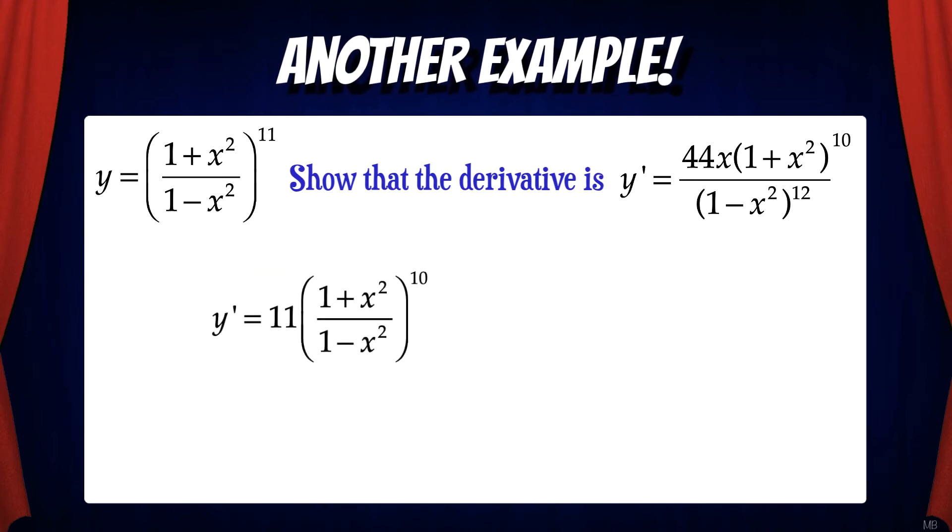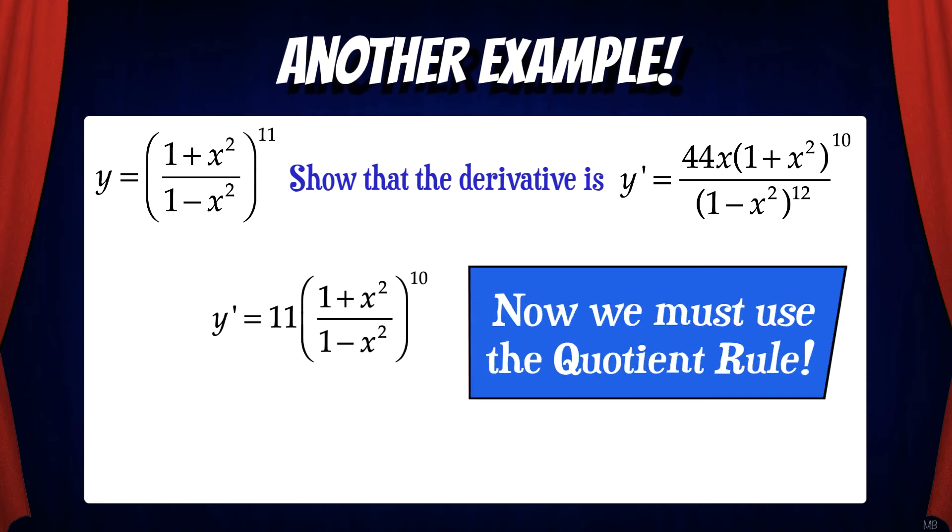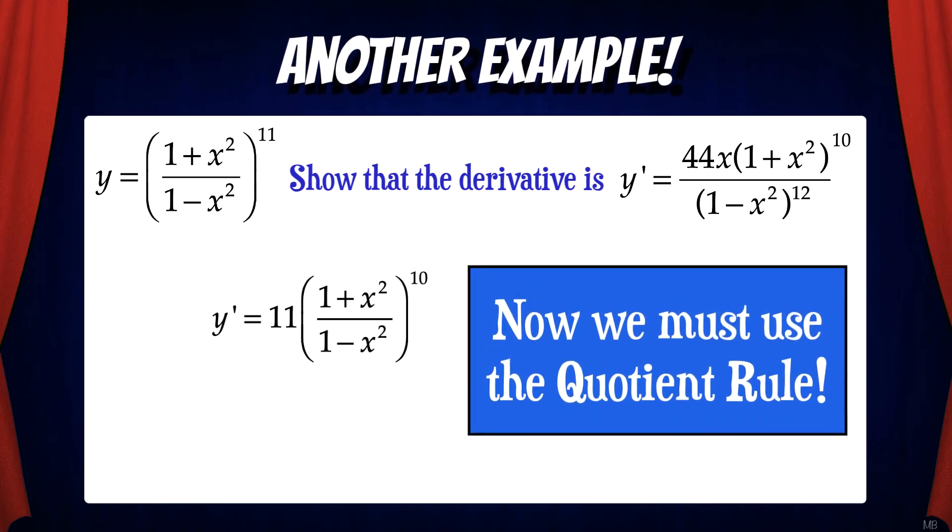So the first part of the derivative is 11 times the quantity of 1 plus x squared over 1 minus x squared to the 10th power. Now we multiply by the derivative of that inside function. But you'll see that inside function is a quotient. So we have to use the quotient rule.